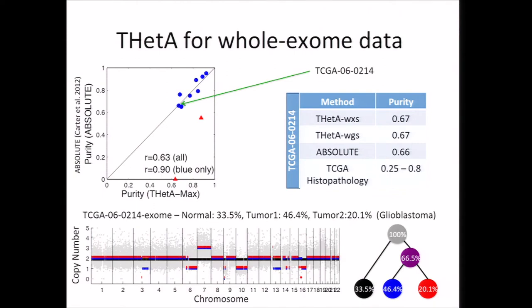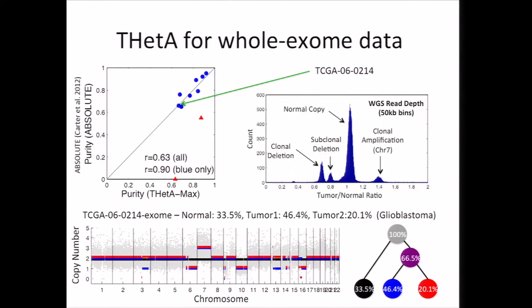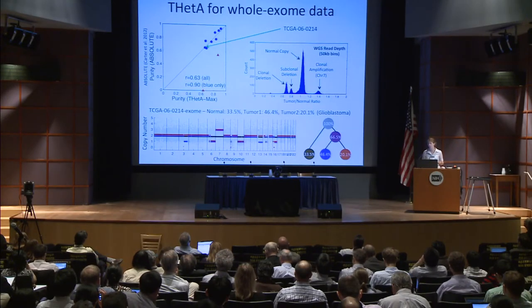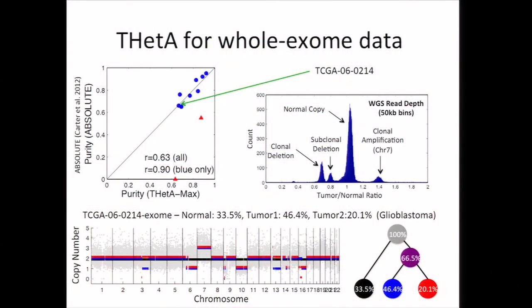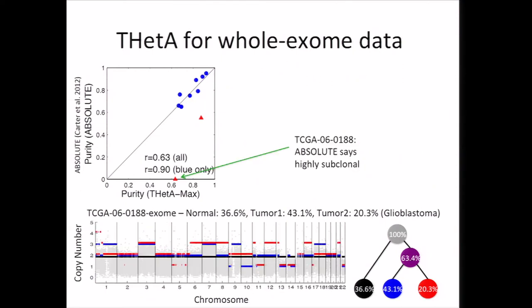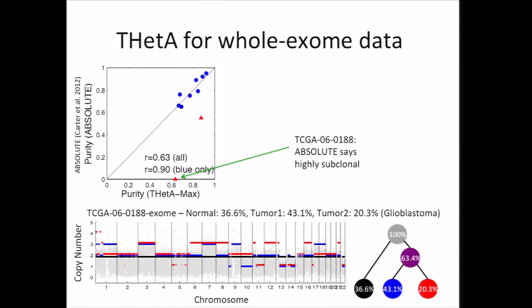We wanted to do further analysis to make sure these were real. We looked at read depth information for the whole genome data, partitioning the genome into 50 KB intervals and examining the histogram of read depth ratios. In this diagram, different peaks correspond to different copy numbers in different populations of cells in the sample. The big peak corresponds to normal copy regions; we see amplifications and deletions that exist in all cells. But we also see another peak in between deletions and normal copy, which directly corresponds to these subclonal deletions that we predicted. There are also some samples where ABSOLUTE appears to underestimate purity or fails to predict purity due to high subclonality, and THetA is able to infer information about the different subpopulations in such cases.